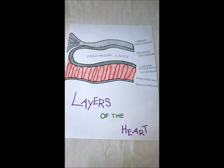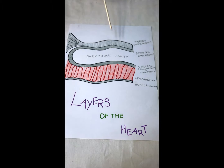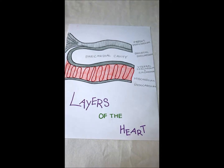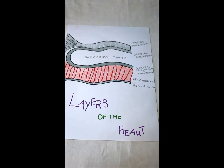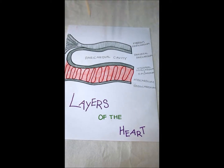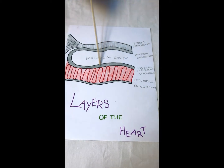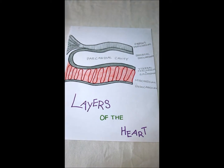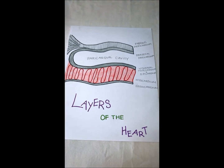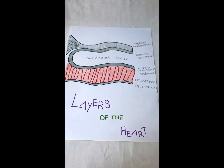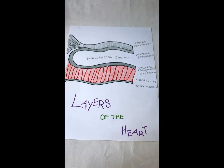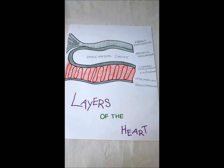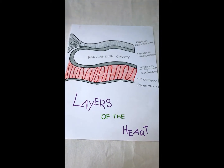There are three layers that surround the heart. There is the fibrous layer, which is the top outer layer, the parietal layer, which is under the fibrous layer, and the visceral layer, which is around the heart itself. The visceral layer is also called the epicardium. Between the parietal and visceral layer is the pericardial cavity, which is there to reduce surface tension and provide lubrication.